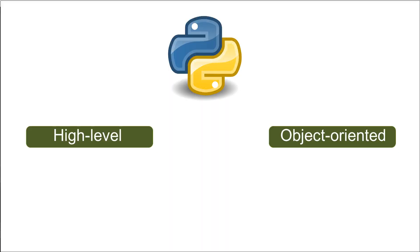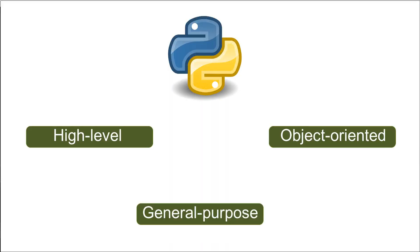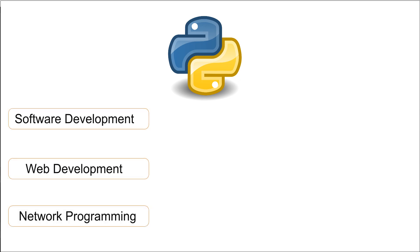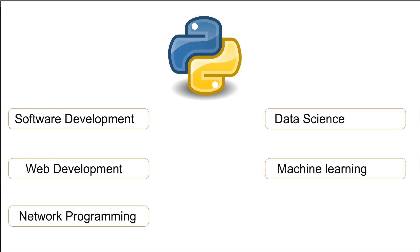Python is a high-level, object-oriented, and general-purpose programming language. Nowadays Python is used in every field of IT — software development, web development, network programming, data science, machine learning, artificial intelligence, and much more. In this video we are going to learn Python from beginner level to advanced level, in depth and step by step. If you want to learn Python, this video is for you.